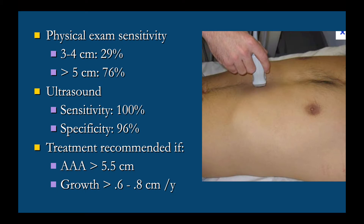When we consider physical exam sensitivity, we decide we should use ultrasound all of the time — even with an aneurysm greater than five centimeters, we would miss at least 25% on physical exam. Ultrasound has a sensitivity of 100% and a specificity of 96 to 99%. If we see an aneurysm greater than 5.5 centimeters, it will need to be repaired, and if it grows more than 0.6 to 0.8 centimeters per year, it will also need repair.